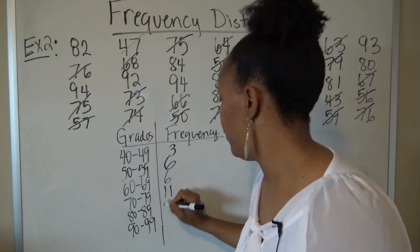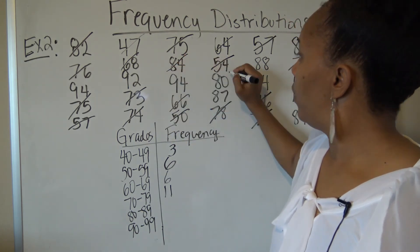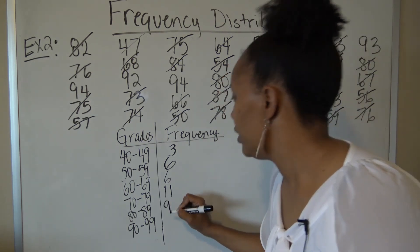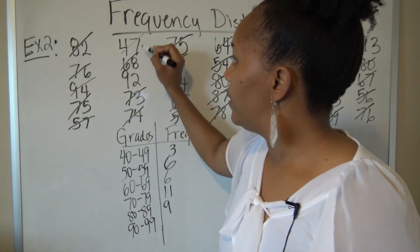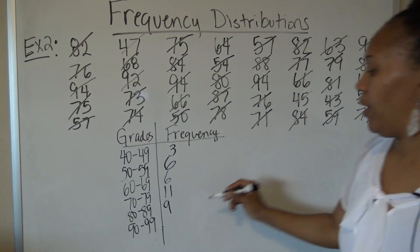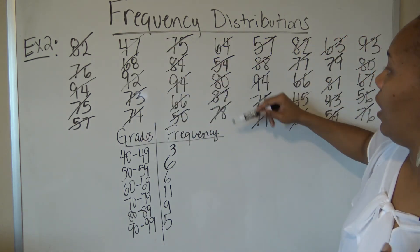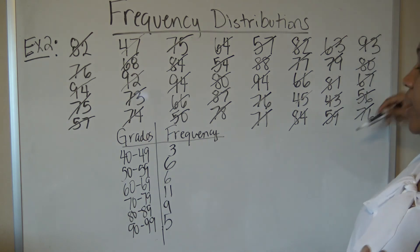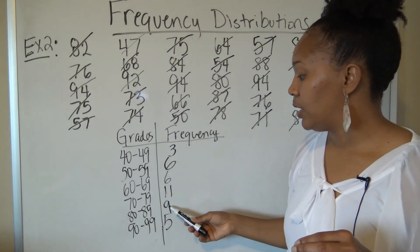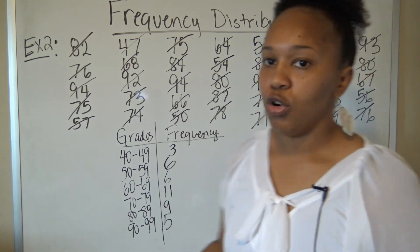For 80–89, looking for the 80s: 1, 2, 3, 4, 5, 6, 7, 8, 9 — nine in that category. For 90–99: 1, 2, 3, 4, 5 — five in that last category. I can verify by checking all numbers have a line through them, and by adding: 3 + 6 = 9, plus 6 = 15, plus 11 = 26, plus 9 = 35, plus 5 = 40. That matches the 40 students. That's the grouped frequency distribution.